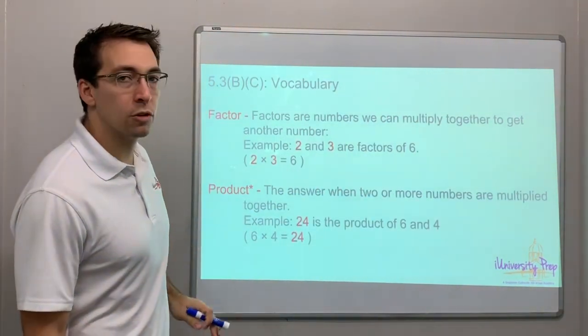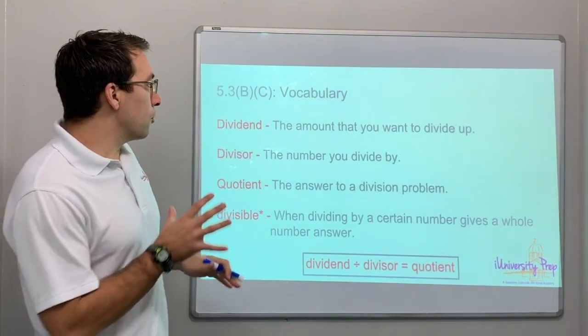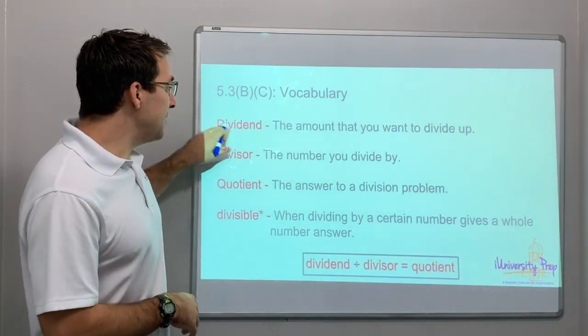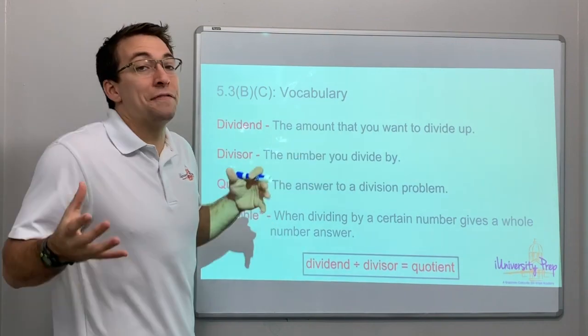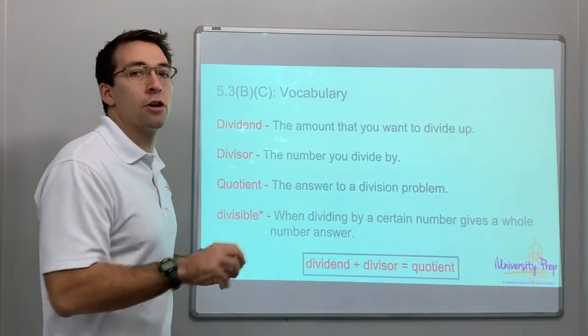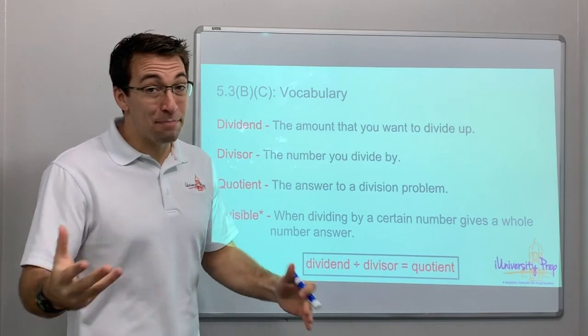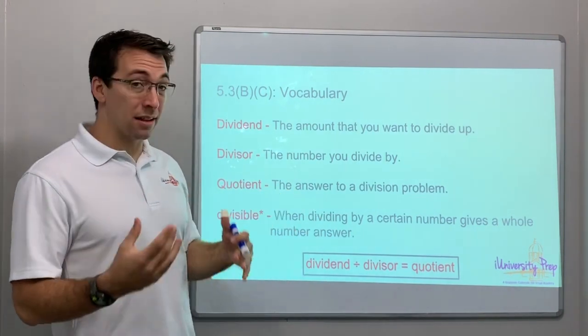Here's our vocab for multiplication. For division, the dividend is the amount that you want to divide up. So that's the number under the house. Divisor, the number you divide by. Quotient is the answer.